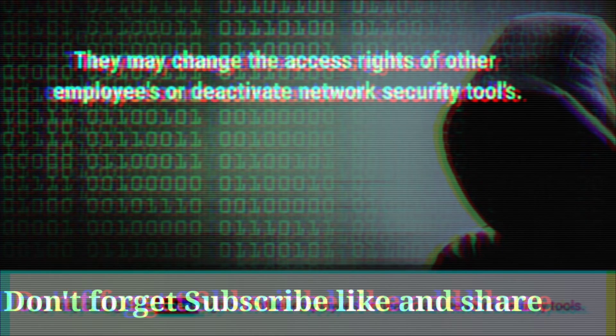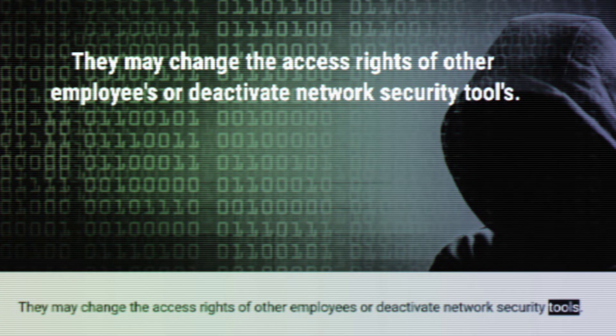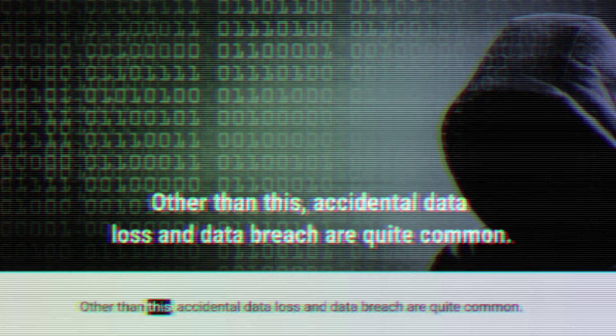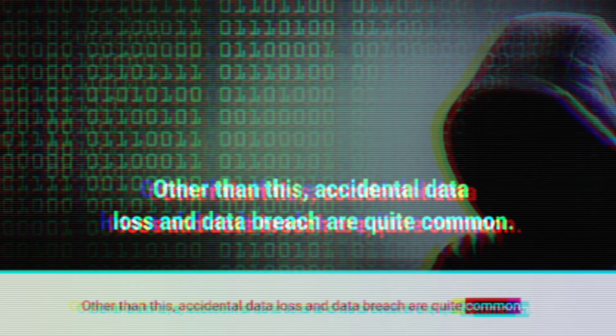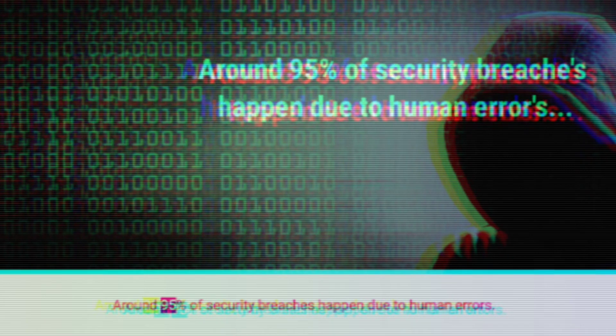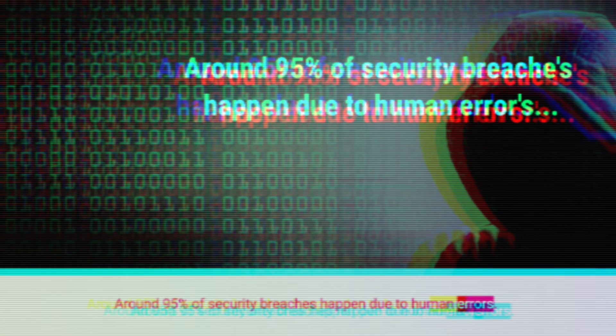They may change the access rights of other employees or deactivate network security tools. Other than this, accidental data loss and data breach are quite common. Around 95% of security breaches happen due to human errors. Common examples include people leaving their laptops accidentally on trains and buses while traveling, accidentally deleting data from a folder, or spilling a drink on devices.